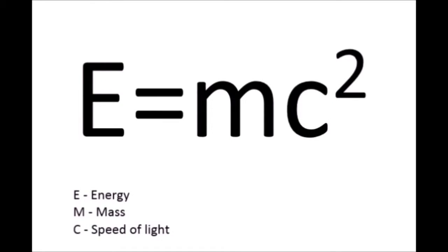Special relativity is also where one of the world's most famous mathematical formulas comes from: E=mc². In this equation, E stands for energy, M represents mass, and C is the speed of light. In other words, energy and mass are equivalent — one can't exist without the other.